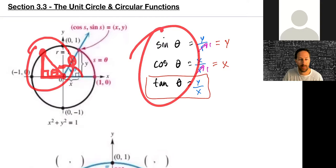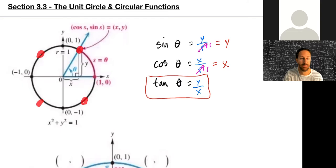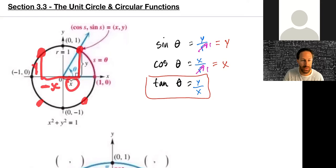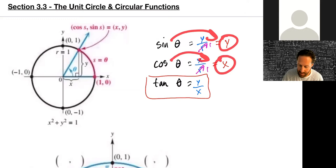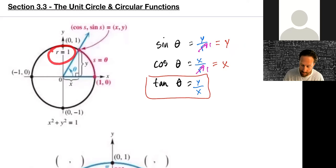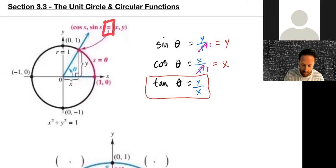Different quadrants yield different positive or negative signs, but the values are the same. Notice how far right and how far up you go: the x and y distances are the same magnitude across quadrants, just with sign differences — for example, a negative x compared to a positive x, while the heights remain equal.